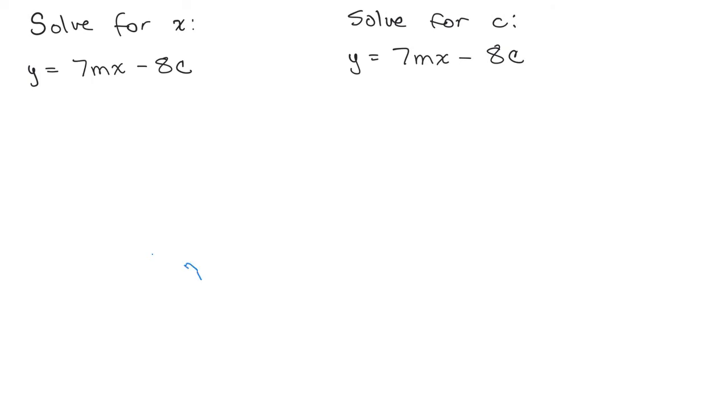So I'm trying to solve for x. Notice here's where x is. This 7m is really just the coefficient of x, and then I have minus 8c. The first thing I want to do is isolate the problem so that the x term is by itself on one side. So I'm going to add 8c to both sides.